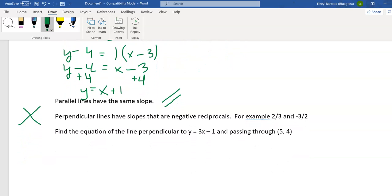We want to find the equation of the line that is perpendicular to y equals 3x minus 1 and passing through (5, 4). So first, there's those key words, find the equation of the line. We know we want to use our point-slope equation.